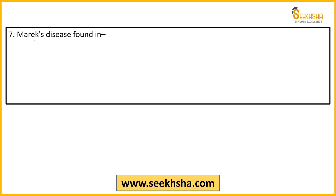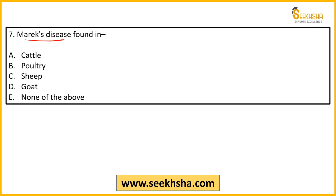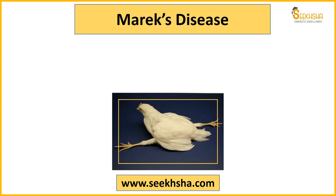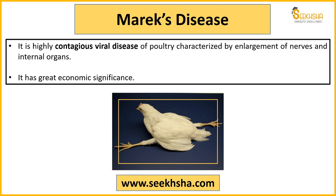Seventh question: Marek's disease is found in which animal? Options are cattle, poultry, sheep, goat, or none of the above. This is a disease-related question for animal husbandry. The right answer is option B — poultry. Marek's disease is found in poultry.